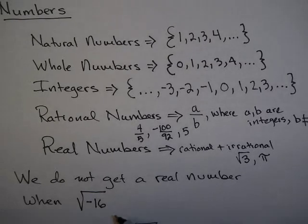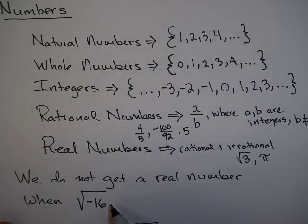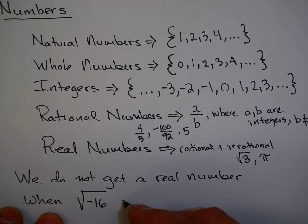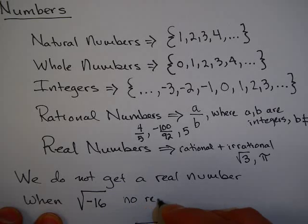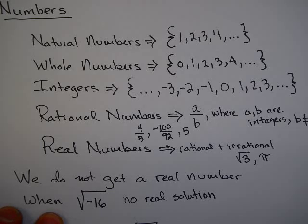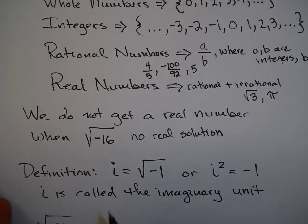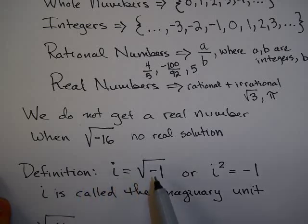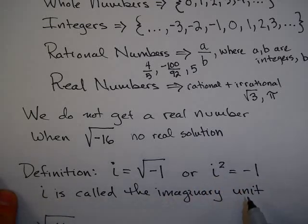This takes care of most of our needs for numbers. However, we've seen in this class that we do not get a real number when we try to take the square root of a negative number. For example, when you've seen square root of negative 16, the answer has often been no real solution. That is correct. However, mathematicians found it cumbersome not to have the square root of a negative number, so they defined a unit that represents the square root of a negative number. That is called the imaginary unit. The definition is that i equals the square root of negative 1, or another way to say that is i squared equals negative 1. i is called the imaginary unit.